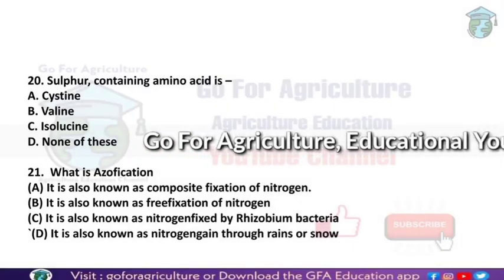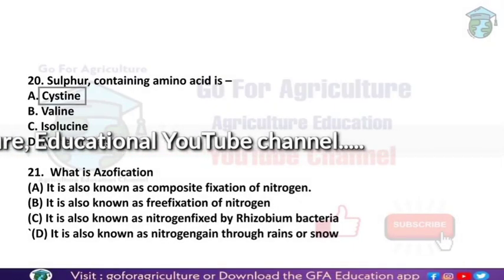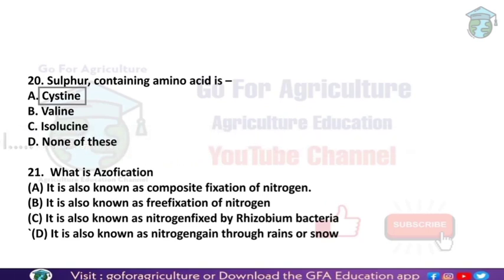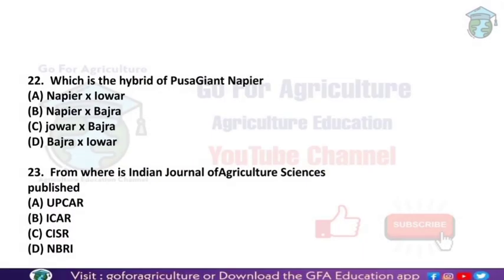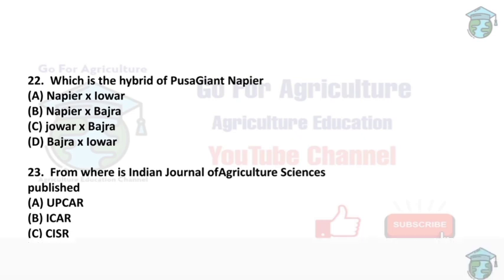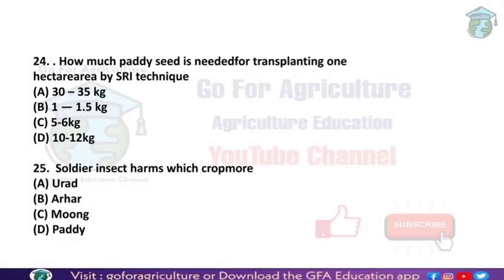The sulfur-containing amino acid is cysteine — this is the easiest question. For questions 21 to 30, I would request you to attempt them yourselves, as they are very easy questions. I'll pause them for two seconds and you can pause on your side. After solving them, check the answers in the last slide. The MCQs in this lecture are mostly from agronomy.